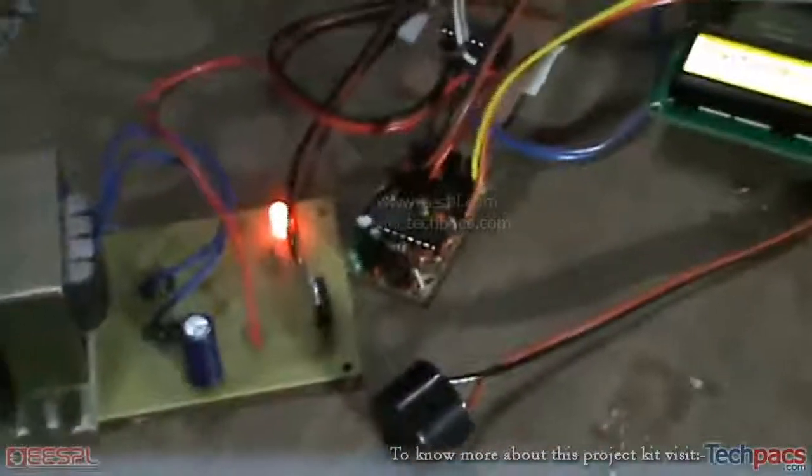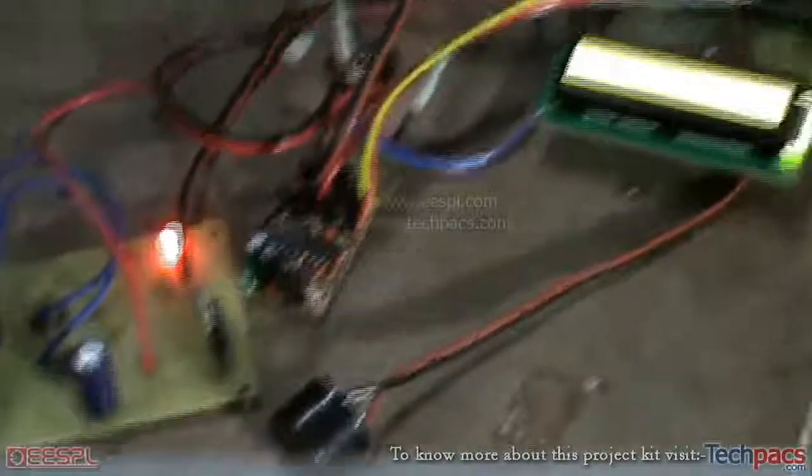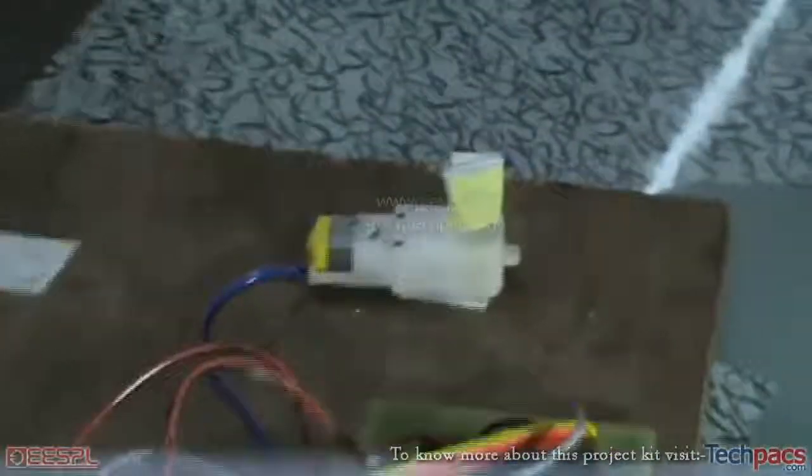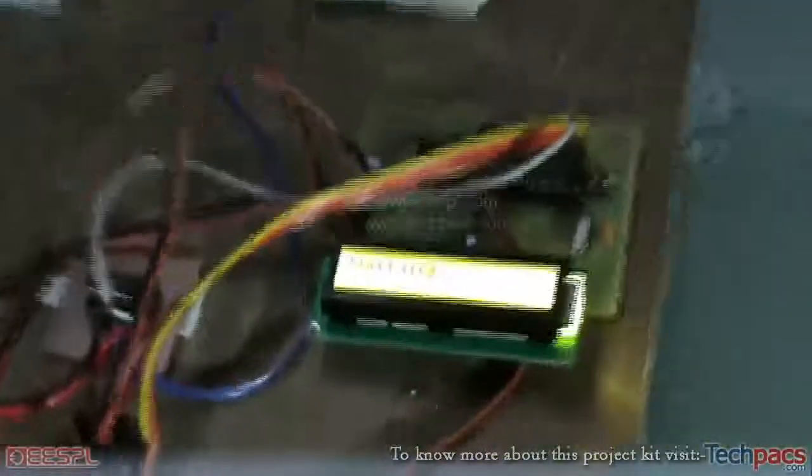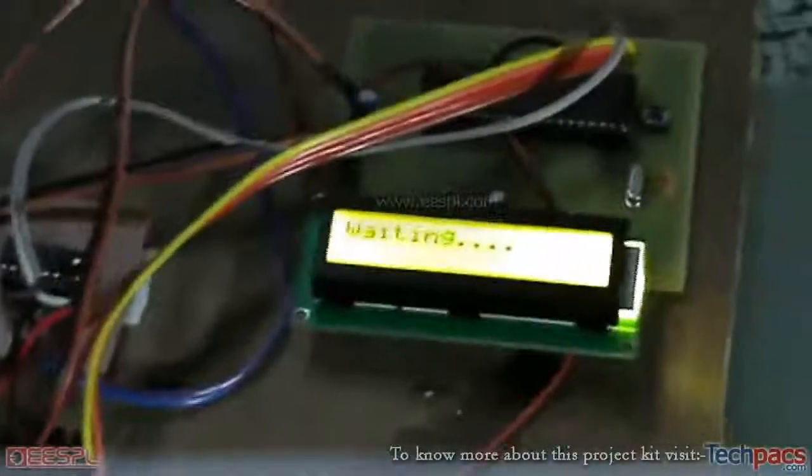As you can see the circuitry part, we have an RF receiver here, a buzzer to give an alert, a gear motor that depicts the opening and closing of the barrier, and an LCD to display the activities and our control section.